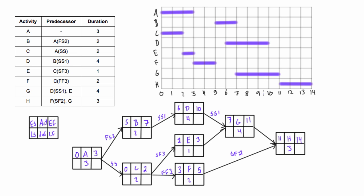Now let's do the backwards pass - this will get a little crazy, but we'll work our way through it. We bring down fourteen and subtract three to get eleven. This is a regular finish-to-start relationship, so we can bring that eleven right in and subtract four to get seven. This is also a regular finish-to-start relationship, so we can bring the seven right in and get seven minus one equals six.